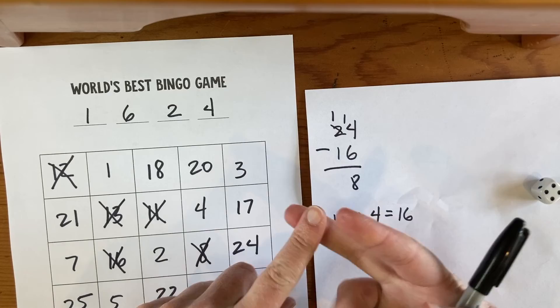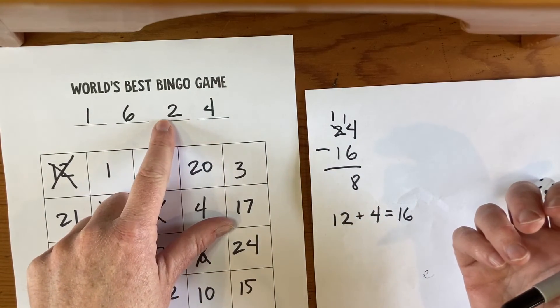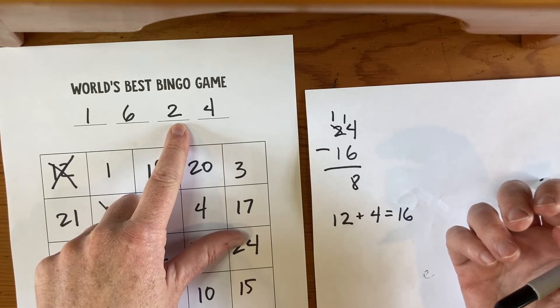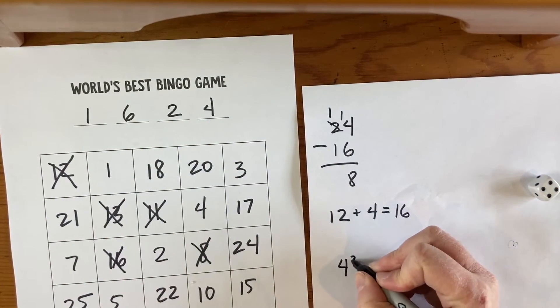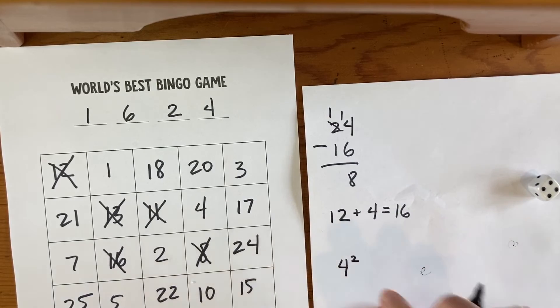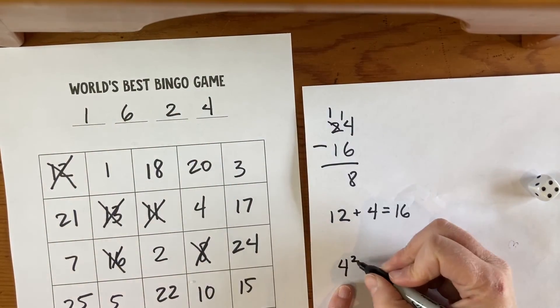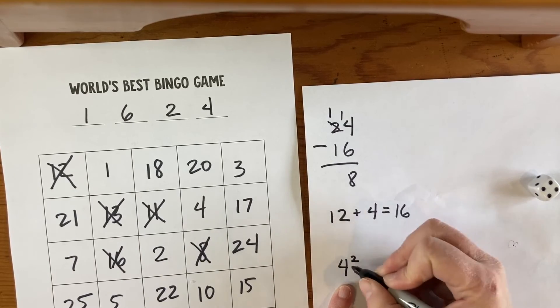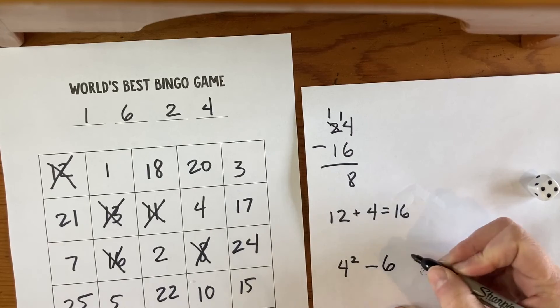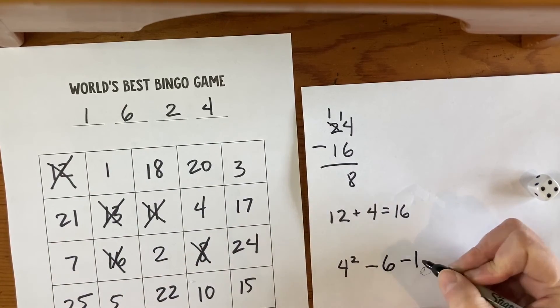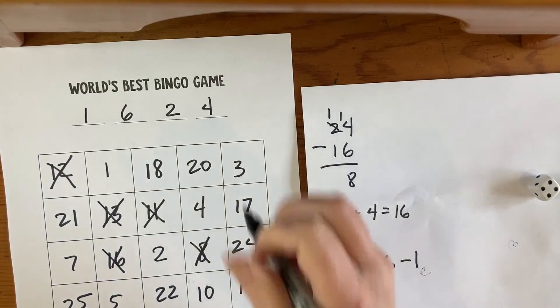You can add, subtract, multiply, divide. You can even use, if you have a 2 on here somewhere, you could do numbers squared. So you could do 4 squared, which we know is 4 times 4, so that's 16. You could do 4 squared minus 6, so that's 10, minus 1 is 9, and cross that off. You'll just keep going, people working together, until you get one whole row crossed off.